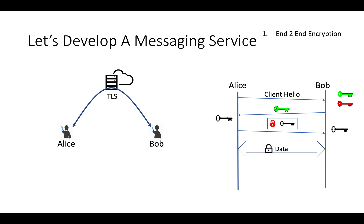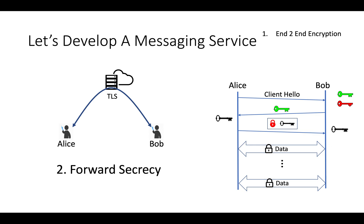Alice and Bob keep this secure connection going for a long time — days or months. Now consider a hacker on the internet capturing all packets from Alice and Bob's communication. Even though all packets are encrypted and the hacker cannot decrypt them, they have still been captured. One fine day, the hacker hacks Bob's device and steals his private key. Using this key, the hacker can decrypt all conversations captured in the past. This is our second problem statement: if I am having conversations now, how can I keep them secure in the future? This is called future secrecy, or more formally, forward secrecy.